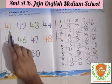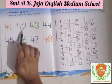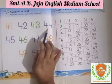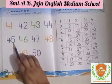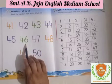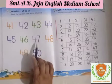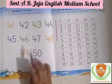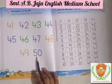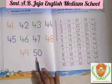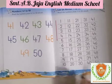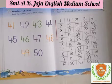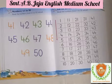Now turn the page — page number 34. Numbers 41 to 50. Read the numbers from 41 to 50 aloud: 41, 42, 43, 44, 45, 46, 47, 48, 49, 50.